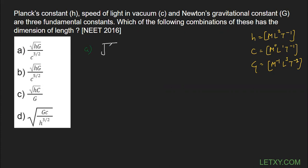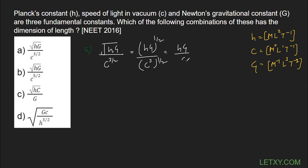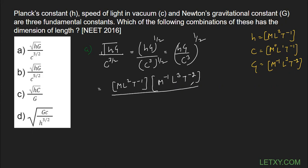For part (a), we are solving √(hG / c^(3/2)). The square root means a power of one-half. We can rewrite c^(3/2) as c cubed with the overall power of one-half. Now substituting: h has dimension ML²T⁻¹, G has dimension M⁻¹L³T⁻², and c has dimension L¹T⁻¹ cubed, all raised to the power of one-half.